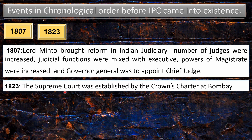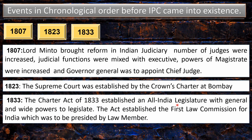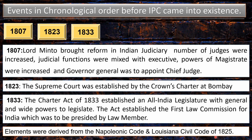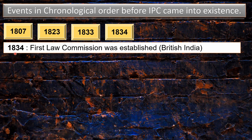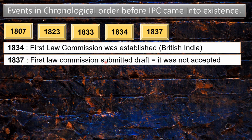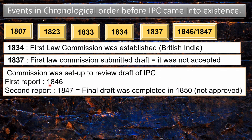In 1823, the Supreme Court was established by the Crown's Charter at Bombay. Then in 1833, the Charter Act established an All India Legislature with general and wide powers to legislate, and also established the first Law Commission for India, presided by law members. We are now heading towards the Indian Penal Code. The elements were derived from the Napoleonic Code and the Louisiana Civil Code of 1825. In 1834, the first Law Commission was established under British India. In 1837, the first Law Commission submitted a draft, but it was not accepted.